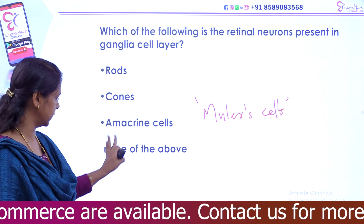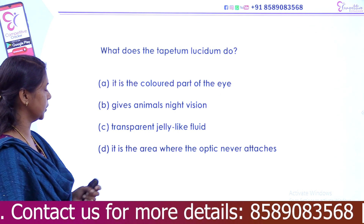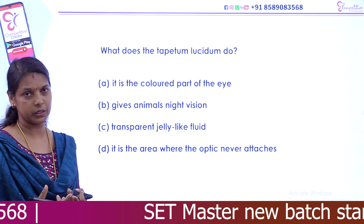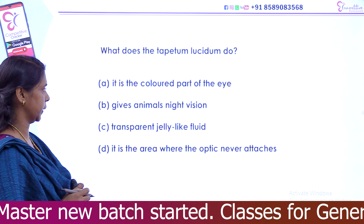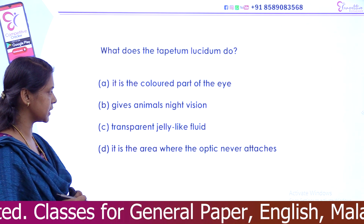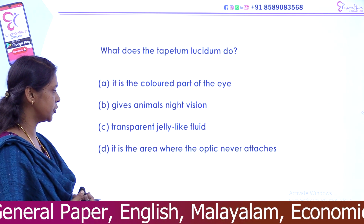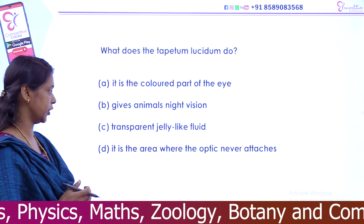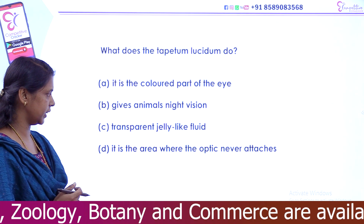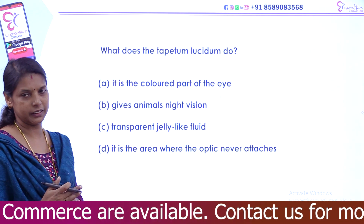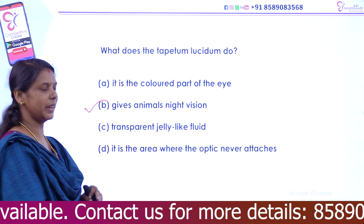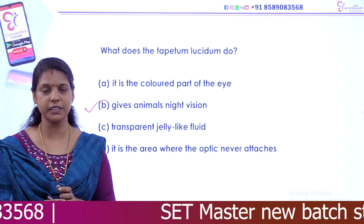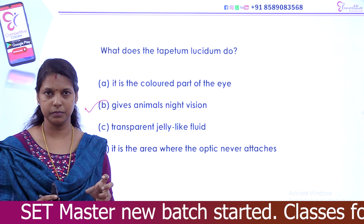What does the tapetum lucidum do? Options: it is the colored part of the eye; it gives animals night vision; it is a transparent jelly-like fluid; it is the area where the optic nerve is attached. The correct answer is it gives animals night vision. Nocturnal animals have very bright eyes — they have a tapetum lucidum that traps light.